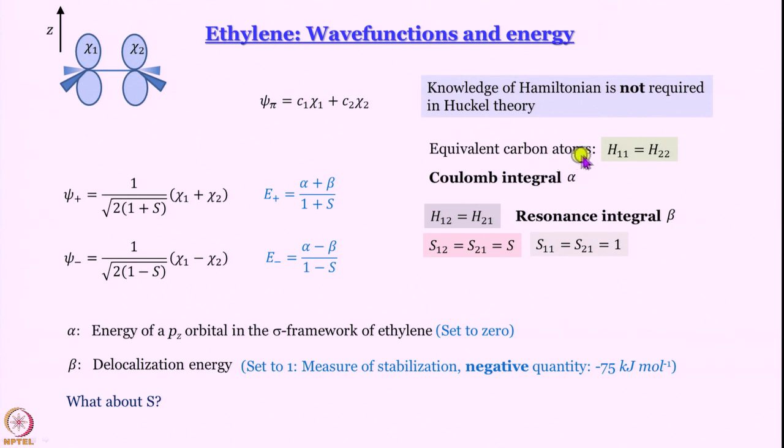For equivalent carbon atoms we remember that H11 has to be equal to H22. We call this the Coulomb integral alpha and then we set it to 0 because all measurements are with respect to alpha. And H12 and H21 we said they are equal to each other and they are called the resonance integral. This is what gives us the stabilization because of pi bond formation.